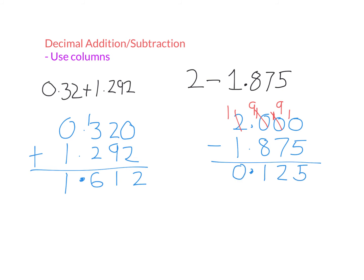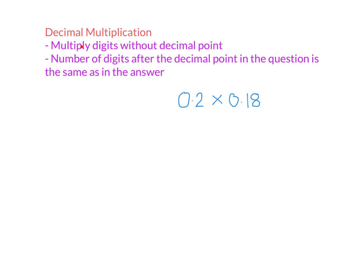Let's look at decimal multiplication. When multiplying decimal numbers, first multiply the digits without regard to the decimal point. For 0.2 times 0.18, I start by doing 2 times 18, which is 36. Then I figure out how many digits after the decimal point the answer should have. In the question there are 1, 2, 3 digits after the decimal point, so the answer needs 3 digits after the decimal point. Placing the decimal point gives only 2 digits after it, so I add a zero at the start. Therefore 0.2 times 0.18 is 0.036.